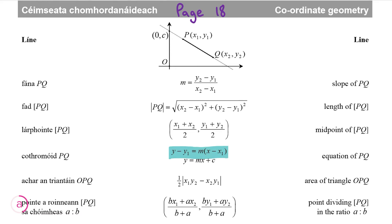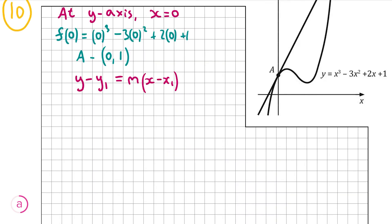We're going to implement this formula into our question to find the equation of the tangent. We already have a point on the line — that's A — so x₁ = 0 and y₁ = 1. However, we still have to find the slope m. To find the slope of a function at a point, we differentiate the function and then substitute in the x value at that point.